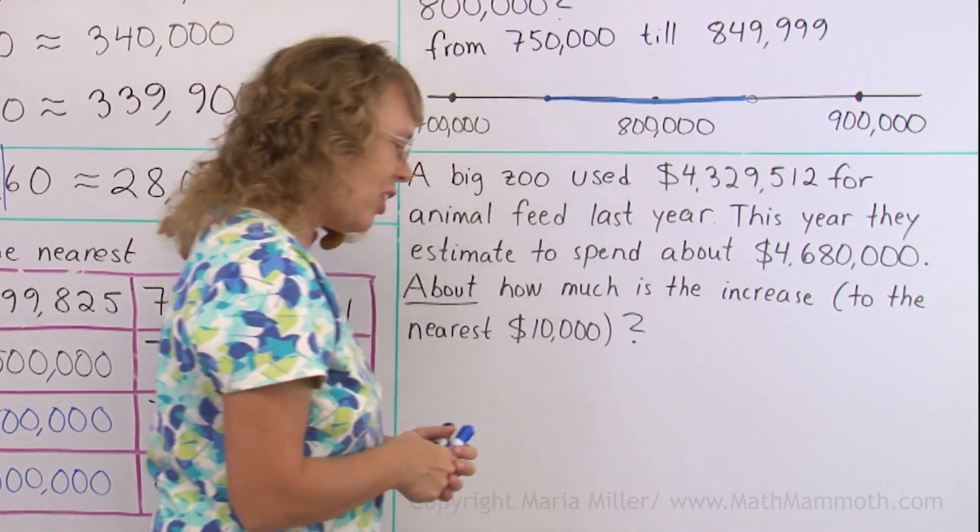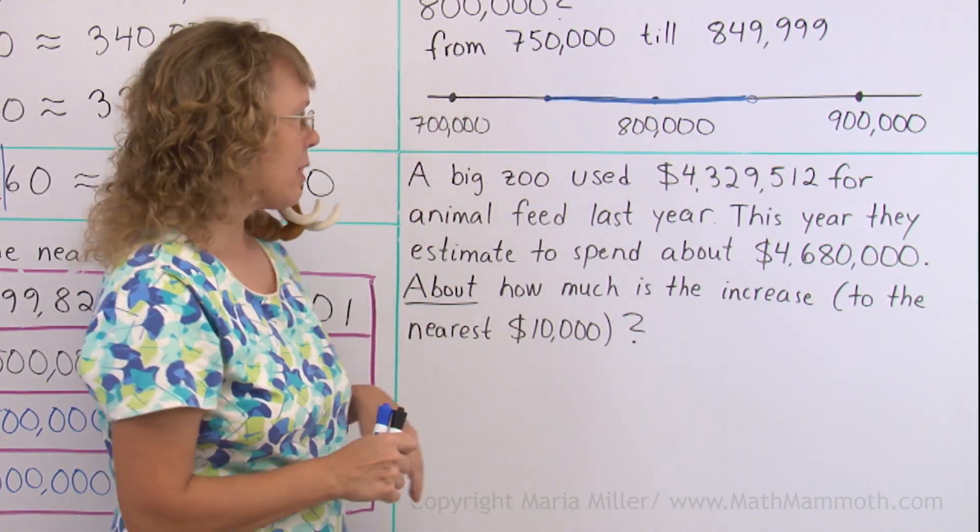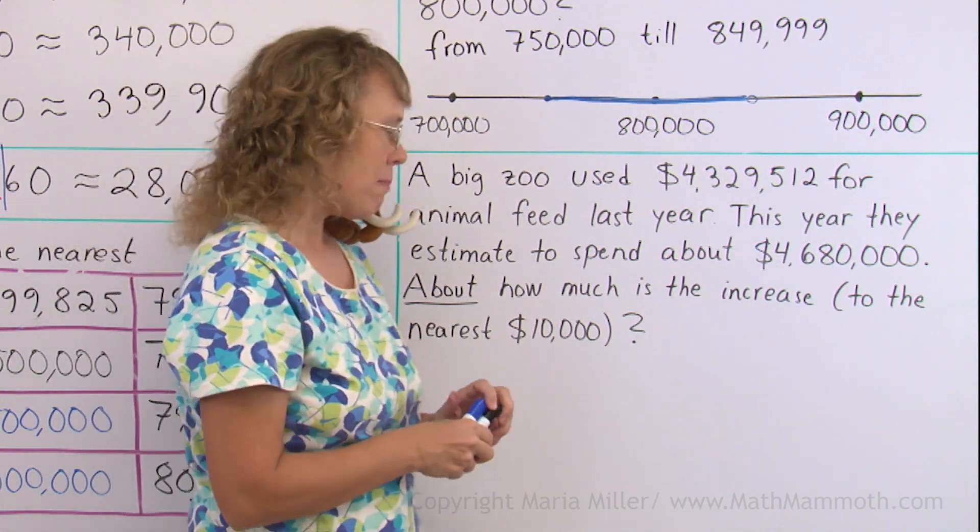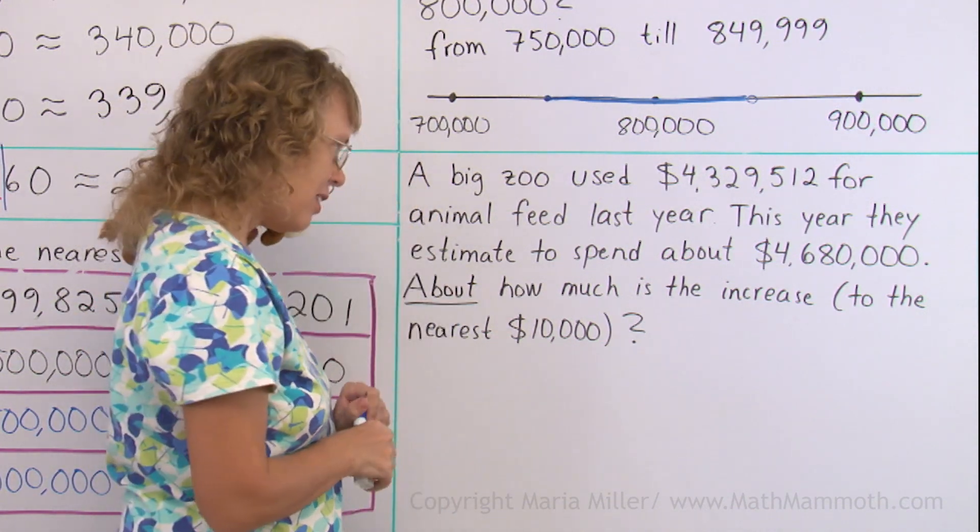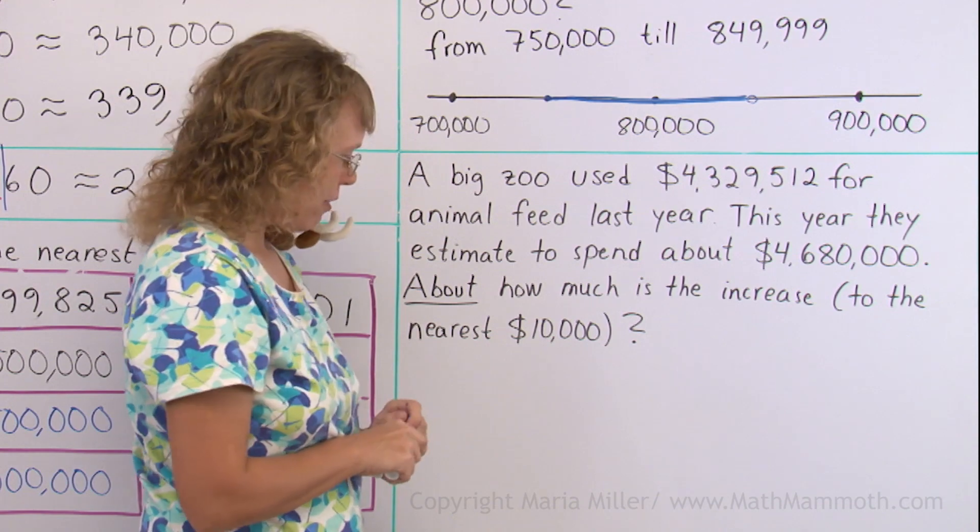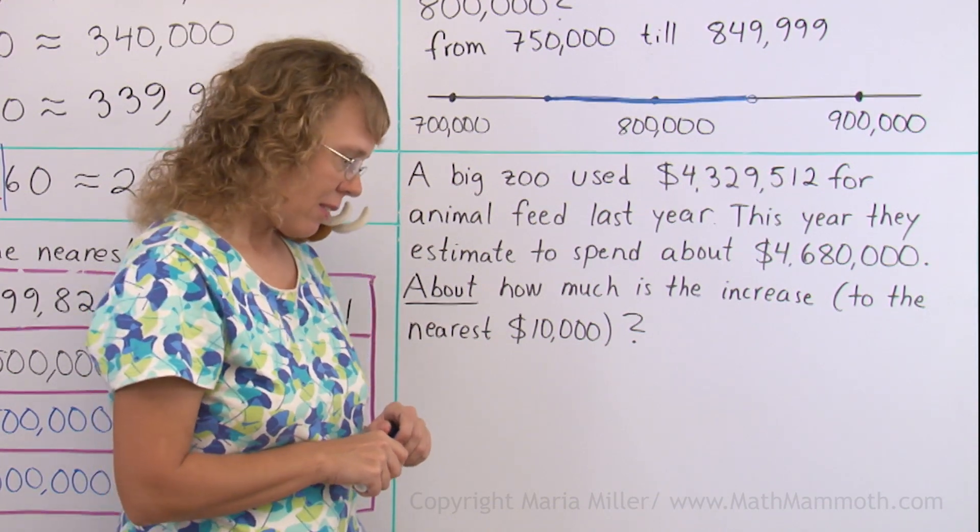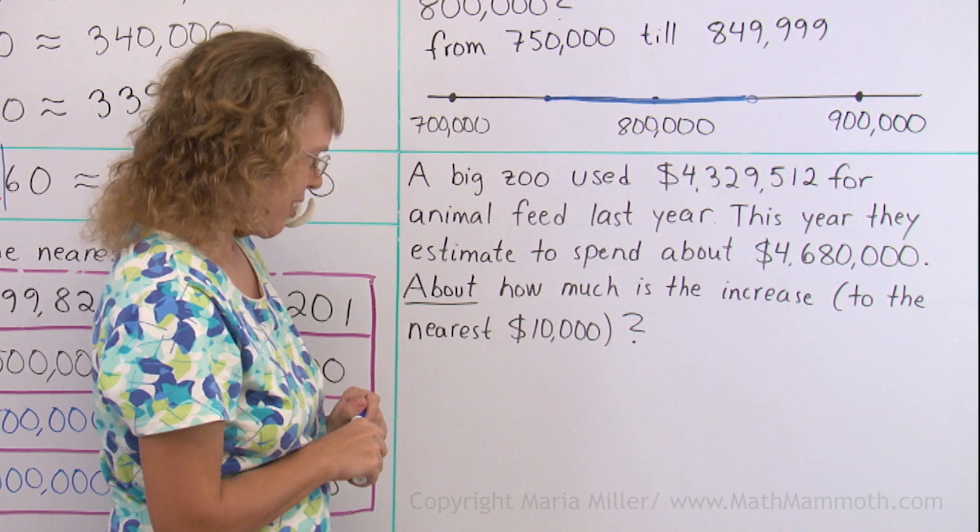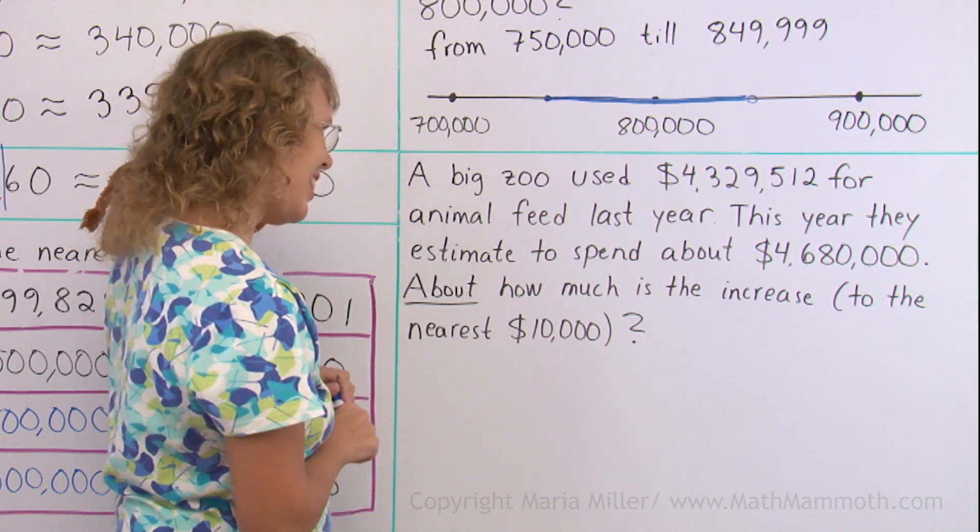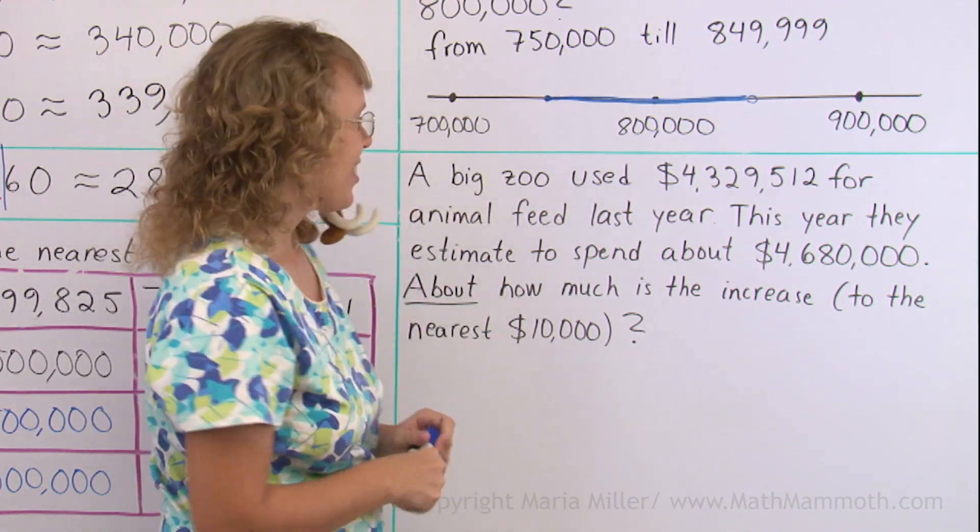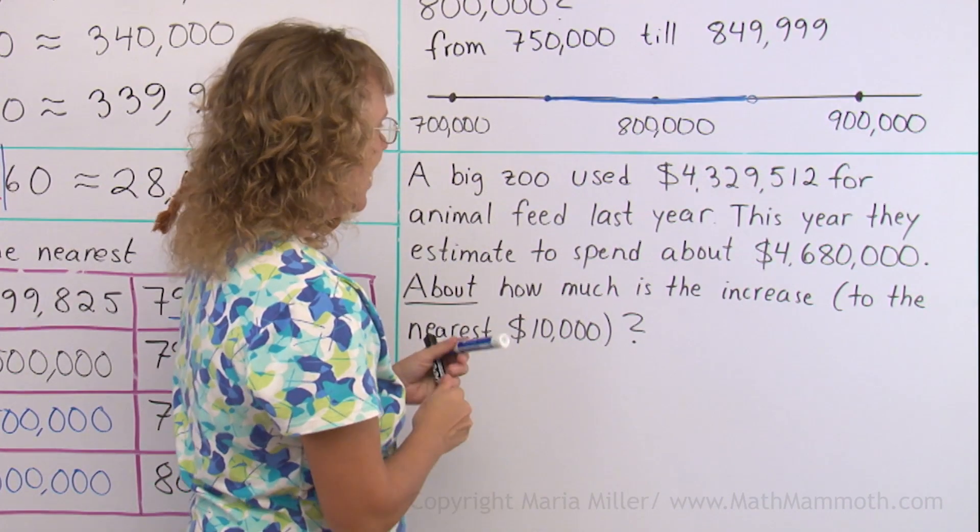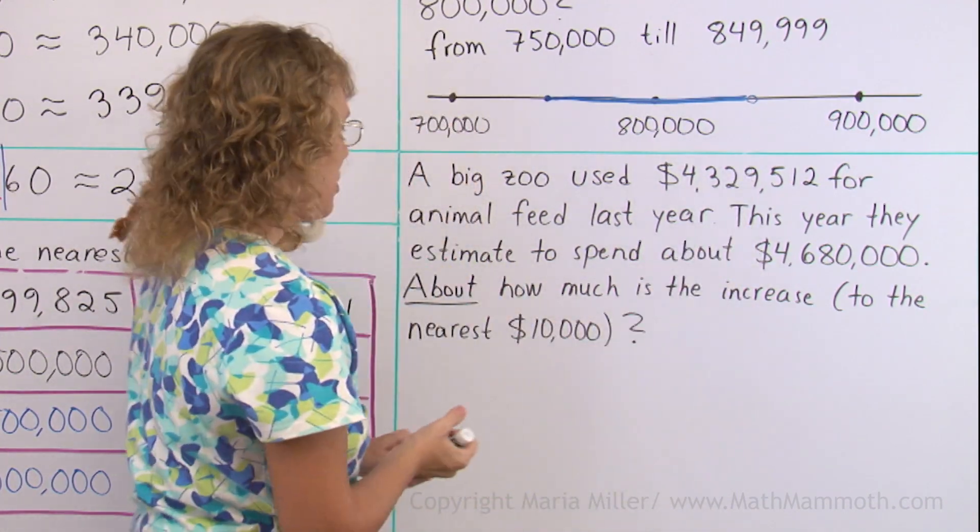Matti is asking if the zoo has mammoths. If they bought any mammoth feed. I don't know. Do you have cousins there, Matti? He thinks he has cousins there. A big zoo should have big mammoths. Okay.